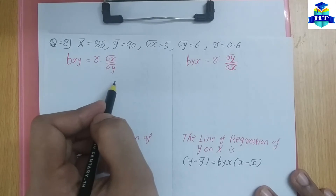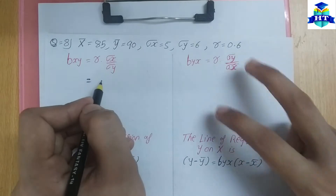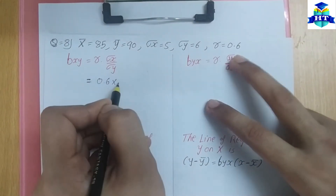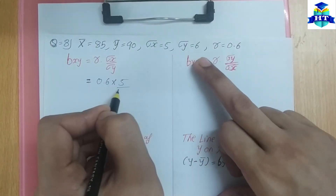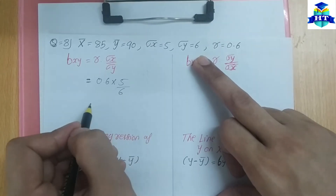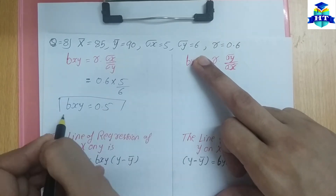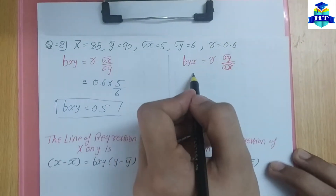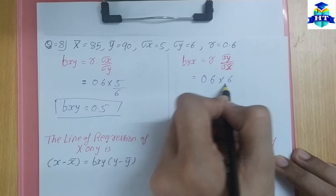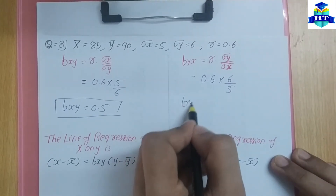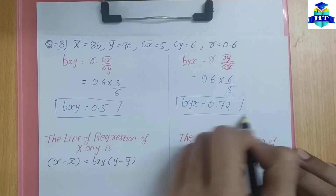So, B X on Y equals R multiplied by standard deviation of X upon standard deviation of Y. R is 0.6, standard deviation of X is 5, standard deviation of Y is 6. Solving this, B X on Y equals 0.5. Similarly, B Y on X equals 0.72.